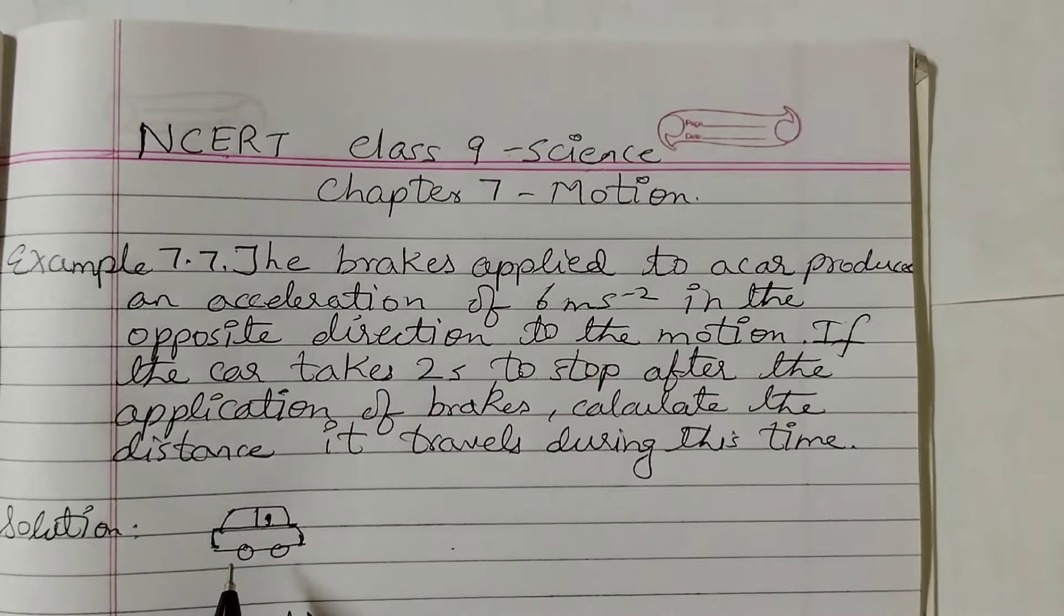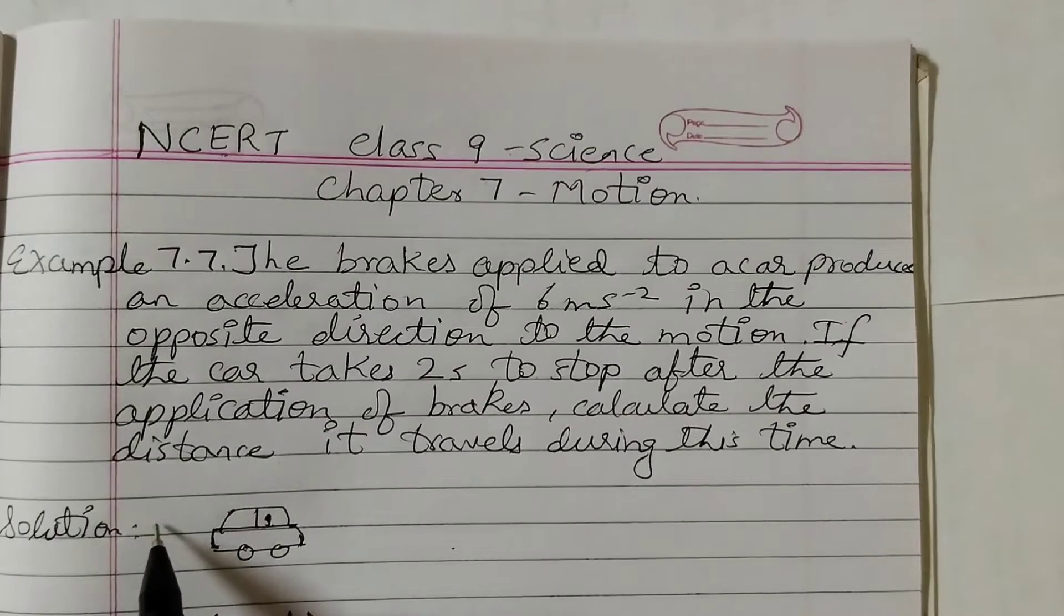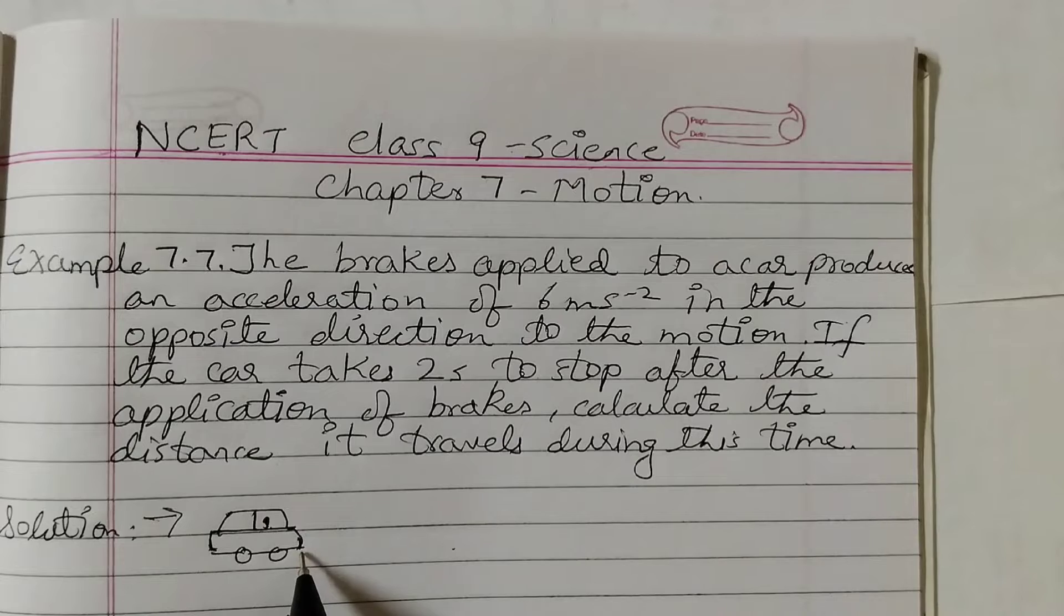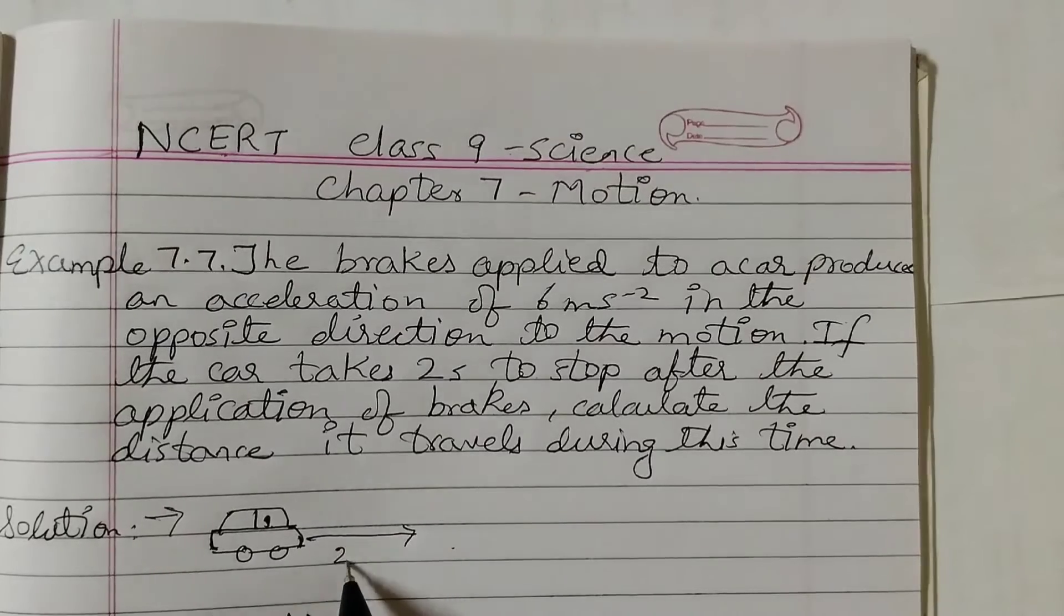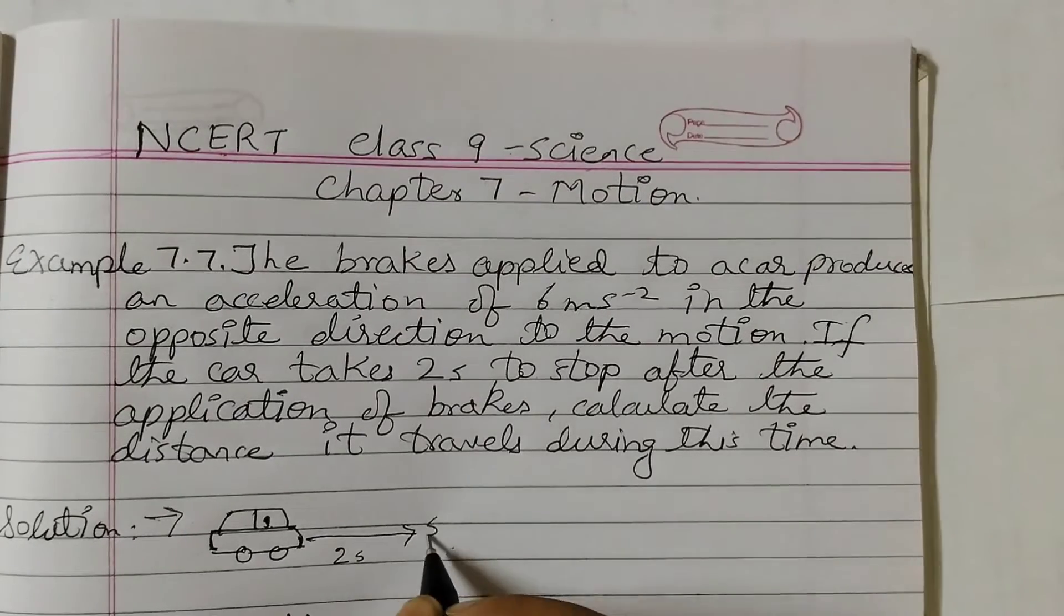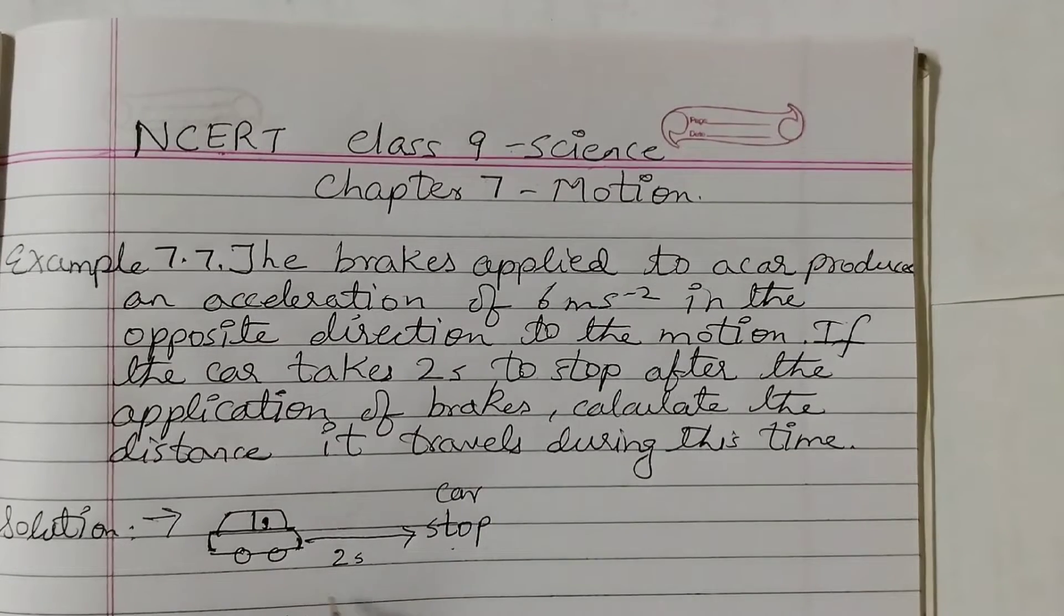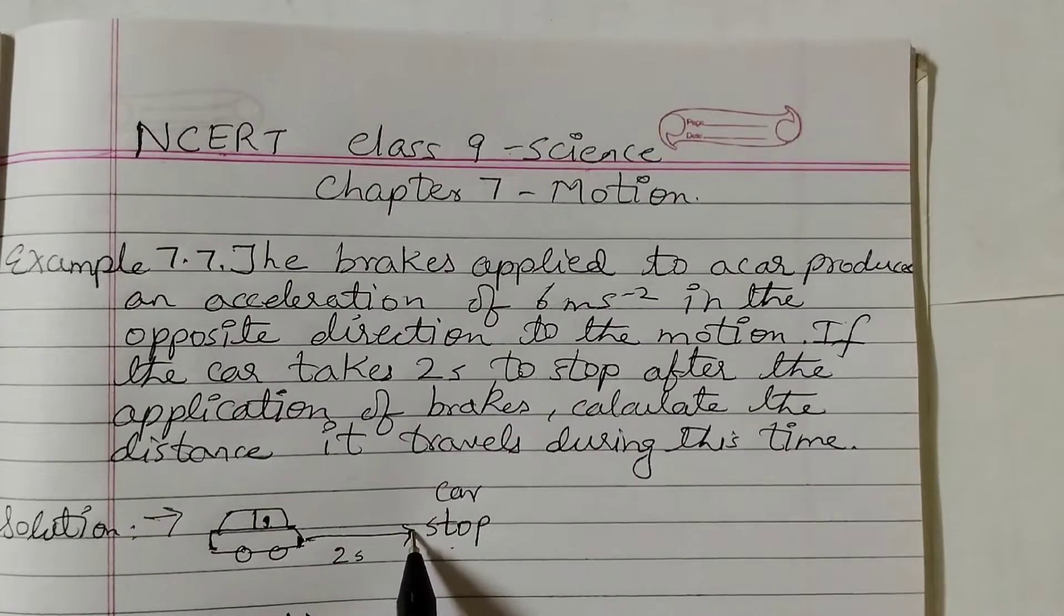So there is a moving car for which we do not know the velocity and it is moving in this direction. We apply brake on this car and then it takes 2 seconds to come to a stop. We need to find out the distance travelled by the car from this point till this point.